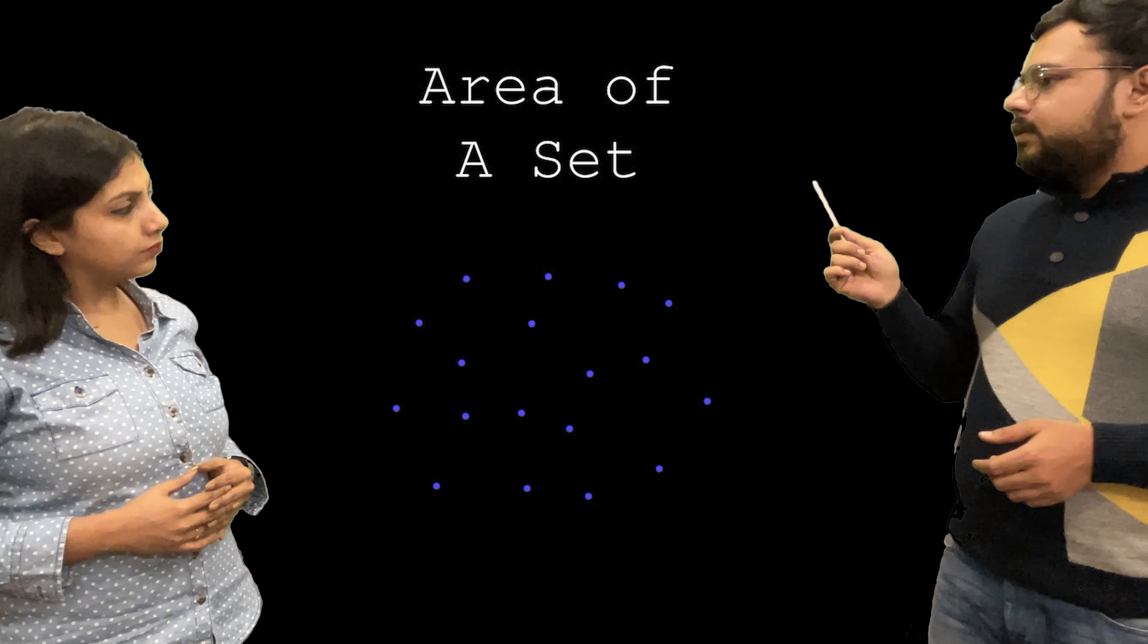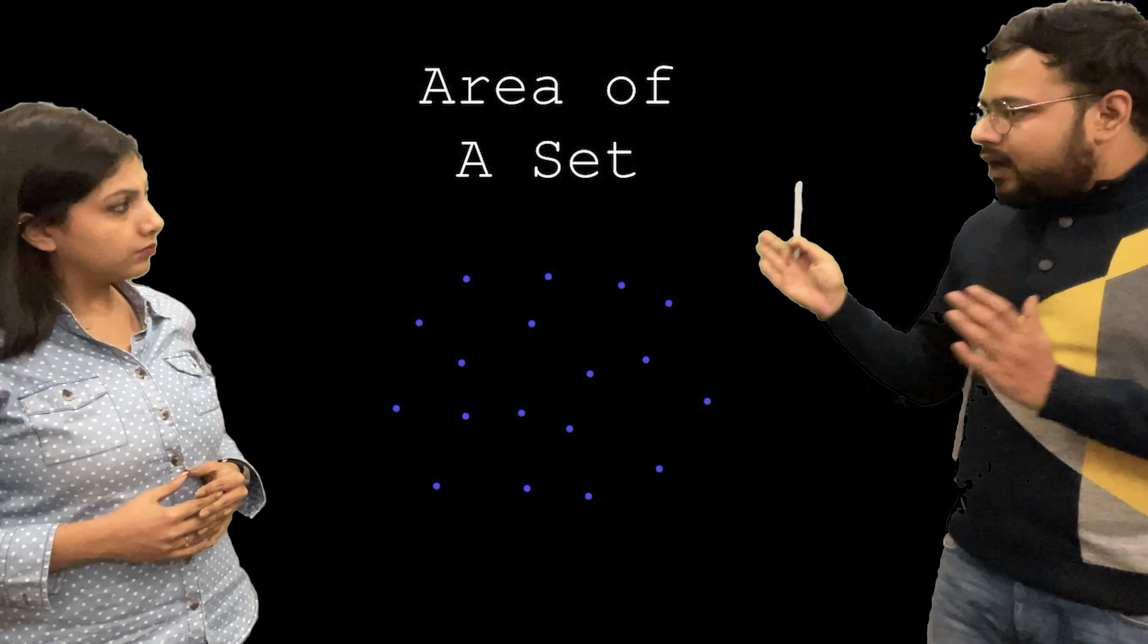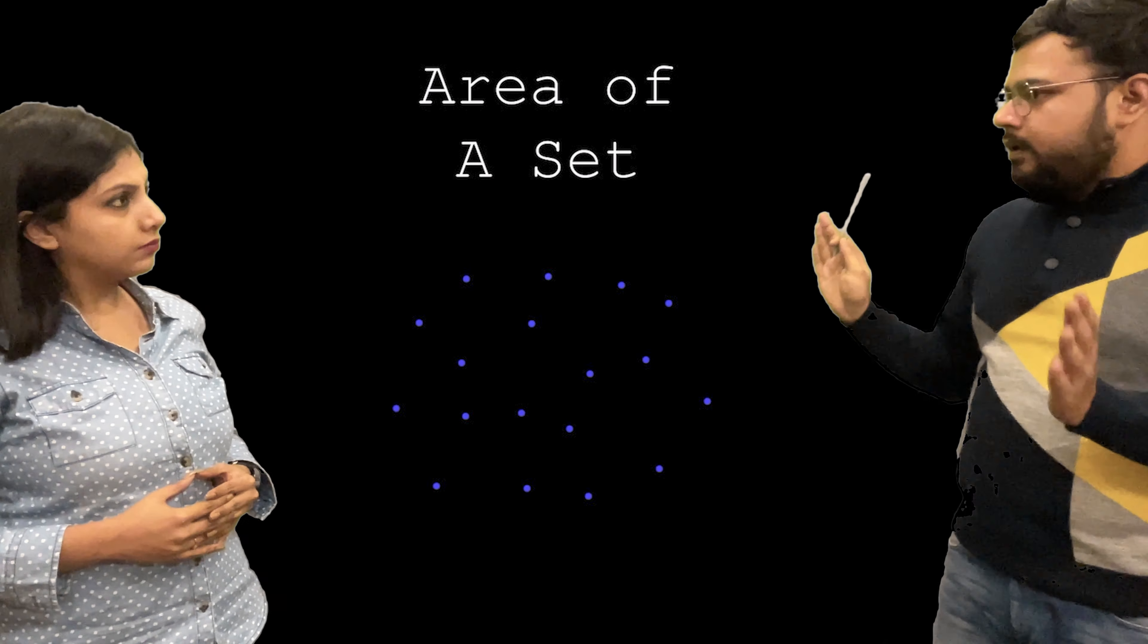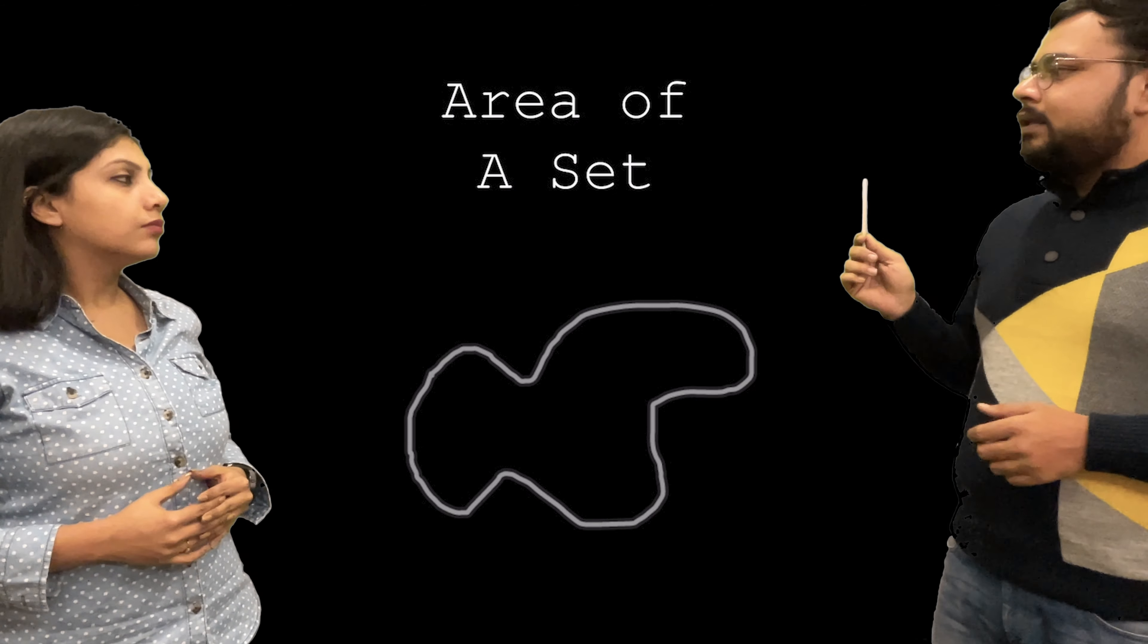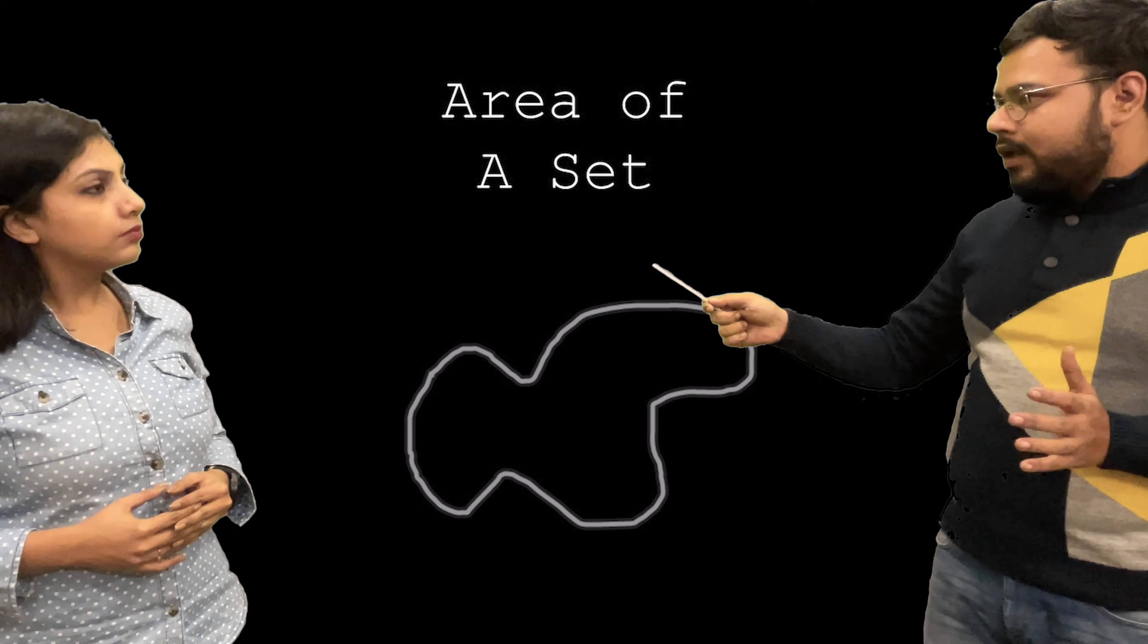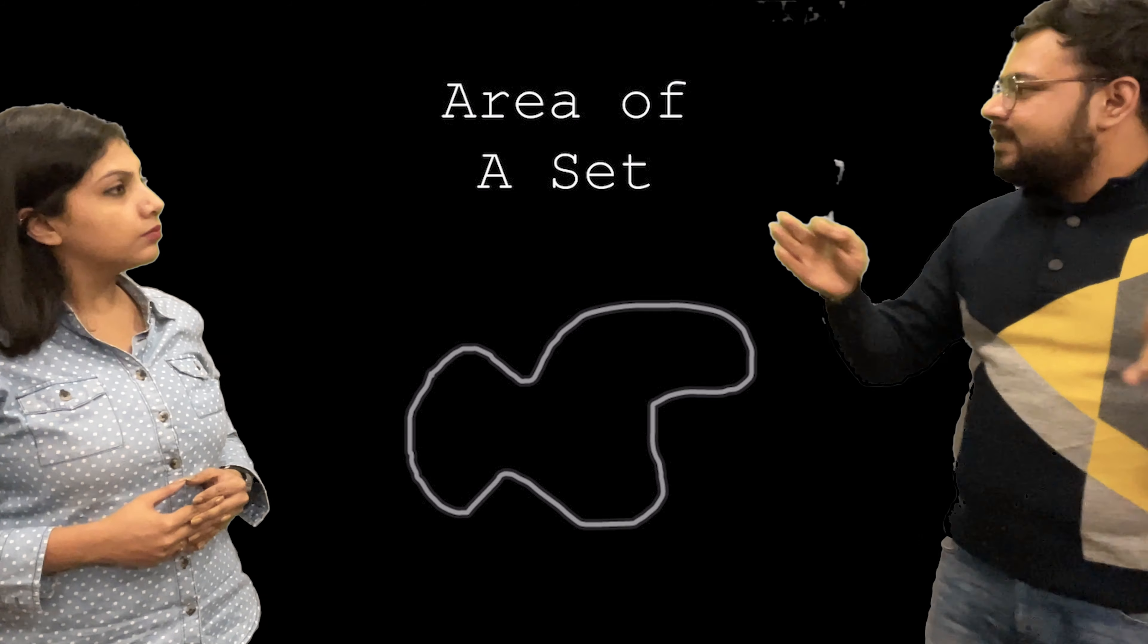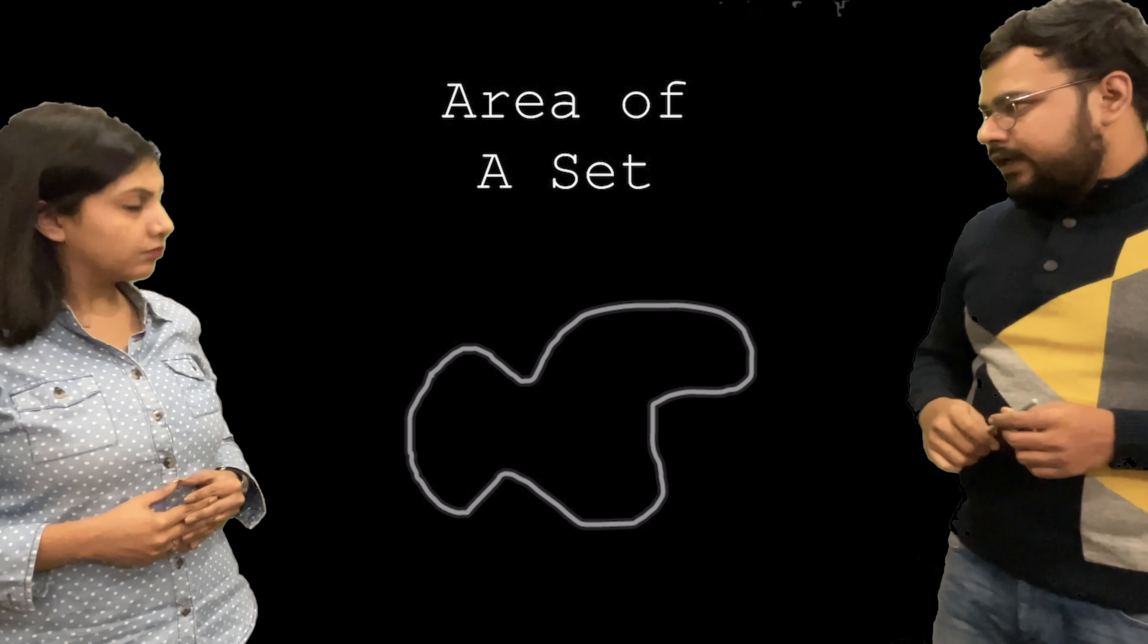Similarly, look at this set. This is a set having some infinitely many discrete points from the plane. Here also for this set, same as the set of natural numbers, we can't really measure the area. But now if you look at this set, let's say I define the set like this. I will have all points inside this closed region in a set. So in that case, I can measure area of that set. That set is actually equivalent to this closed region and I can measure the area of this set.